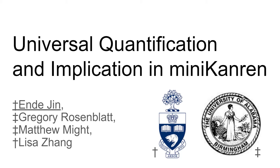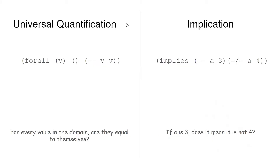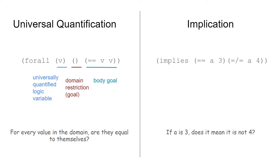This work is adding two new goal constructors, Universal Quantifiers and Implication, into miniKanren in a way that works well with our existing primitive constraints and the recursive relation. These are the two new goal constructors we introduce. For the Universal Quantifier, the full goal has three components that specify logic variables, the body, and the domain restriction. Domain is specified as a goal. Here, we use an empty parenthesis to indicate no restriction on v, and thus v can be anything. This query asks whether for all v on the whole domain, v equals itself. For Implication, it is a goal constructor with two components, antecedent goal and consequent goal. This query asks whether a equals 3 implies a not equal to 4.